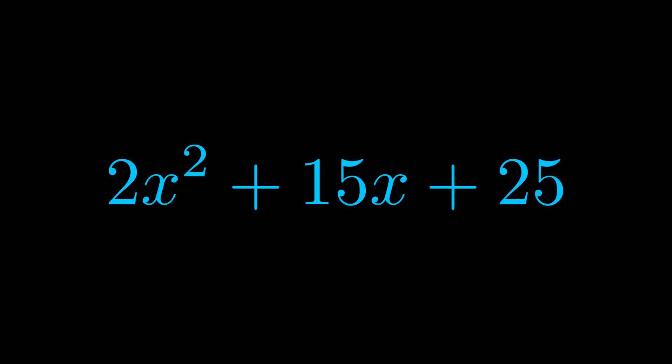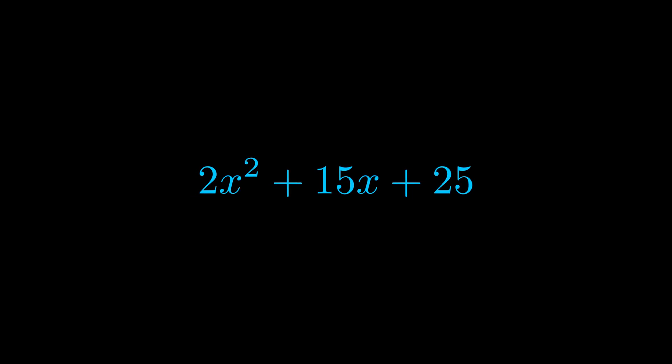Step one when factoring an equation of this form is to multiply the a value by the c value. Here we can see that our a value is the coefficient on the x squared term and our c value is the constant term.